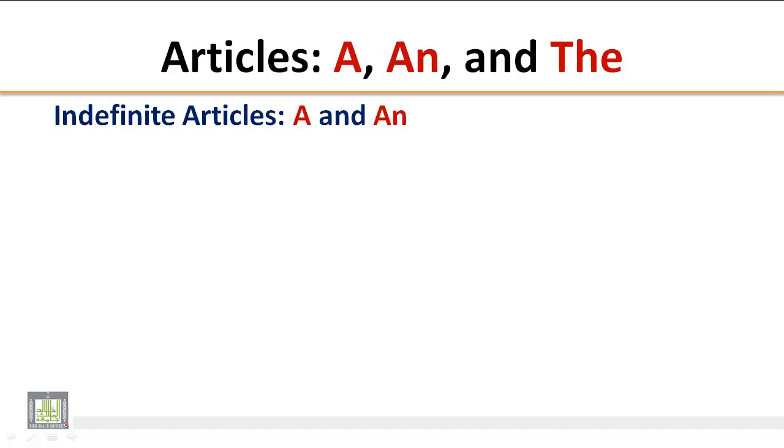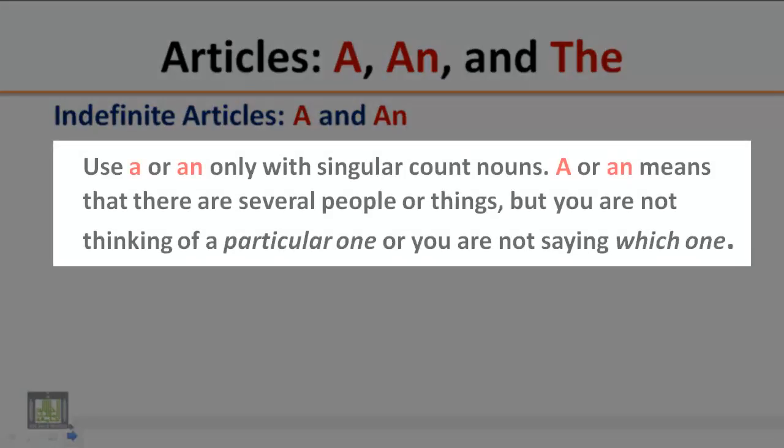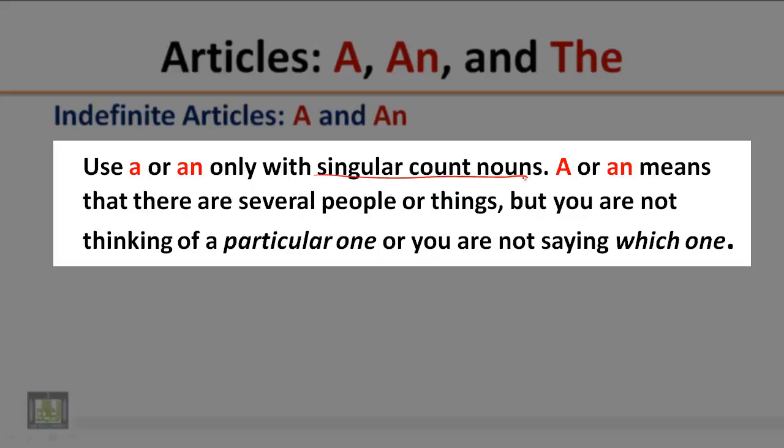Indefinite articles A and An. Use A or An only with singular count nouns like student, book, apple, etc. A or An means that there are several people or things, but you are not thinking of a particular one or you are not saying which one.